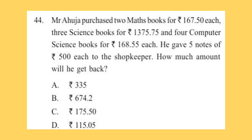Question 44: Mr. Ahuja purchased two maths books for rupees 167.50 each, three science books for rupees 1375.75, and four computer science books for rupees 168.55 each. He gave five notes of rupees 500 each to the shopkeeper. How much amount will he get back?